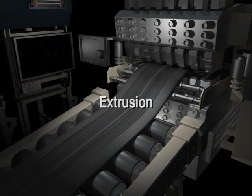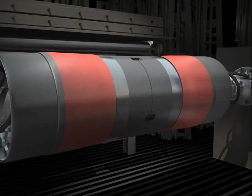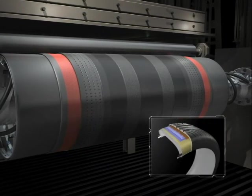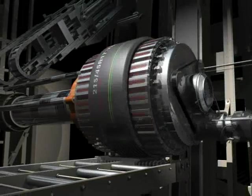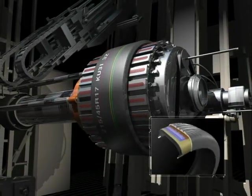Extrusion is a process by which tire components too thick to be calendared are pre-shaped and formed. The side part of the tire, known as a sidewall, provides protection for the carcass cord rubber composite. Tread, sidewall, apex, and other thick components are formed in the extrusion process.